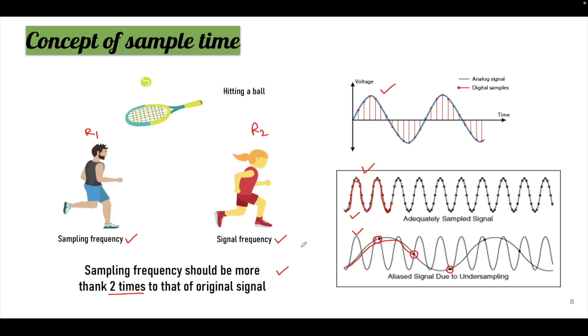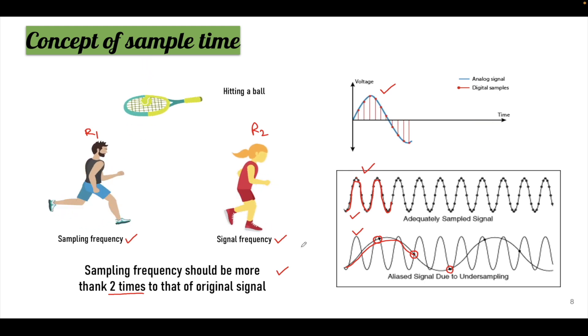But it is always preferable to have a higher frequency compared to the Nyquist frequency which is two times the signal frequency. So this is how you can measure any analog signal and convert it into a digital signal.